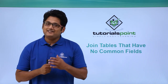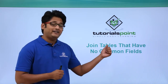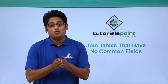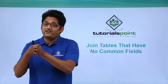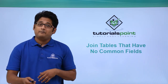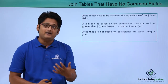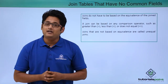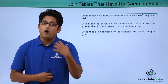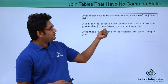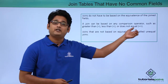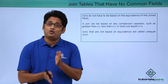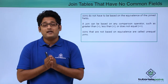Hello friends and welcome to TutorialsPoint. In this video we are going to learn how to join tables that have no common field in Microsoft Access 2016. We have already learned how to create a table and how to create a relationship between them when we have common fields. But it's not necessary that every time we create a relationship they should have equivalence fields. There will be situations where we have to use an operational operator — a join based on a comparison operator which can be less than, greater than, or not equal to. Such kinds of joins which have no equivalence in them are known as unequal joins.